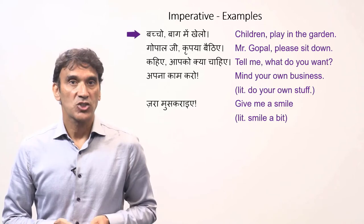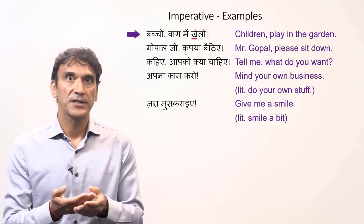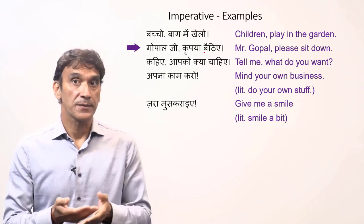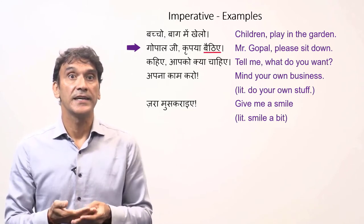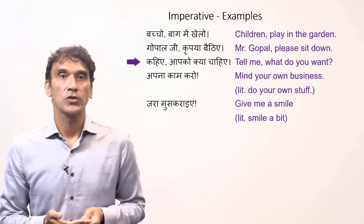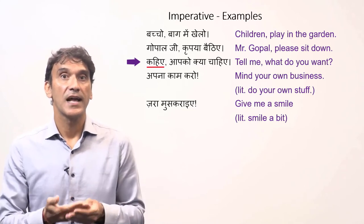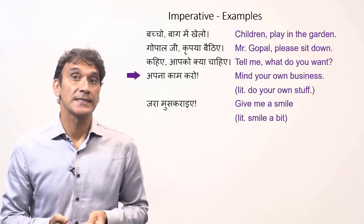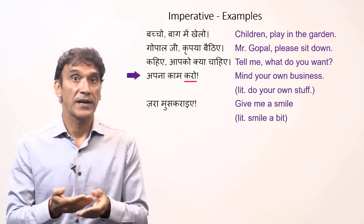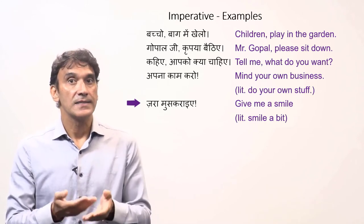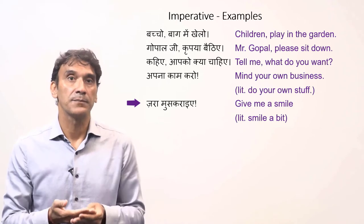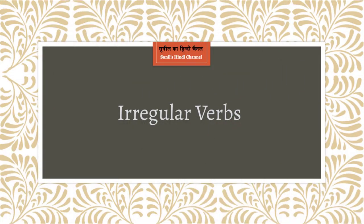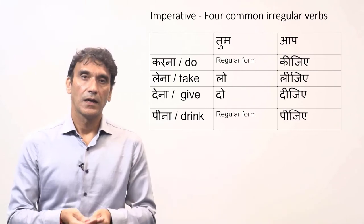Let's take some example sentences: 'Bachon baag mein khelo' — children, play in the garden (subject is 'tum,' so it is 'khelo'). 'Gopal ji, kripaya baithiye' — Mr. Gopal, please sit down (subject is 'aap,' so it is 'baithiye,' the '-iye' ending). 'Kahiye, aapko kya chahiye?' — tell me, what do you want? (subject is 'aap,' '-iye' ending). 'Apna kaam karo' — mind your own business, literally 'do your own stuff' (subject is 'tum,' '-o' ending). 'Zara muskraiye' — give me a smile, literally 'smile a bit' (subject is 'aap,' '-iye' ending).